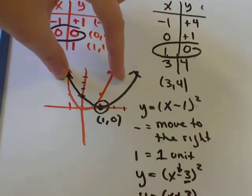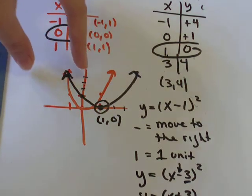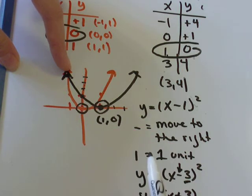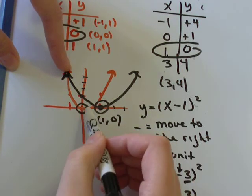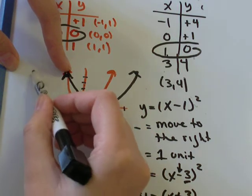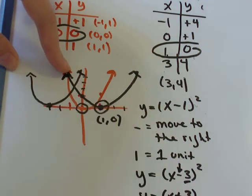So we would take our original graph and we would move it 1, 2, 3 units to the left. So now, instead of our parabola crossing at the point 0, 0, it would now cross at negative 3, 0, and it would look something like that.